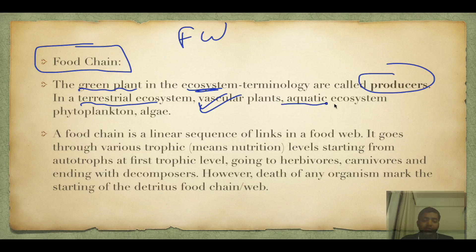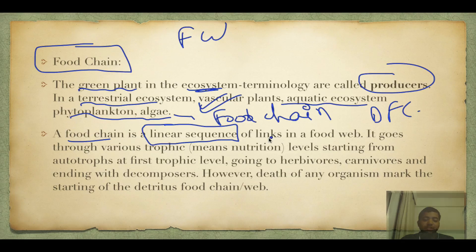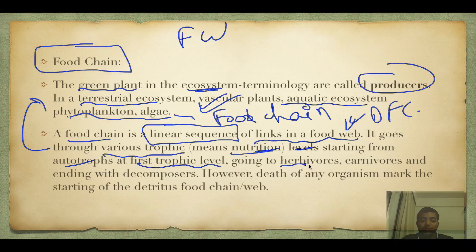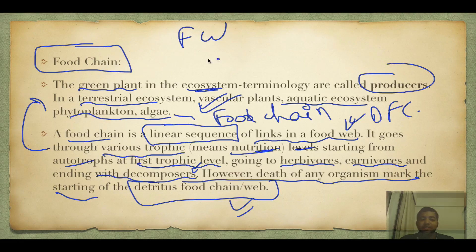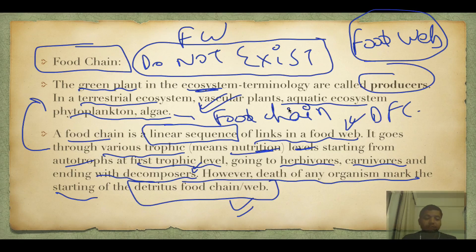Man and peacock are omnivores occupying multiple trophic levels. If you eat milk or curd, you are a secondary consumer because you are feeding on animals indirectly. A food chain is a linear sequence of links in a food web, going through various trophic levels starting from autotrophs at T1 to herbivores, carnivores, and ending with decomposers. In nature, food chains do not actually exist — only food webs exist. A food chain is simply a linear part of a food web.